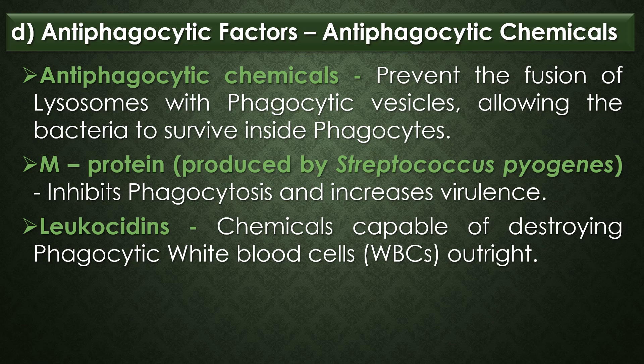The second antiphagocytic factor is antiphagocytic chemicals. Some bacteria produce chemicals that prevent the fusion of lysosomes with phagocytic vesicles, allowing the bacteria to survive inside the phagocytes. Streptococcus pyogenes produces a protein on its cell wall and fimbriae called M protein. This M protein inhibits phagocytosis and thus increases the virulence of Streptococcus pyogenes. Other bacteria produce leukocidins, which are chemicals capable of destroying phagocytic white blood cells outright.